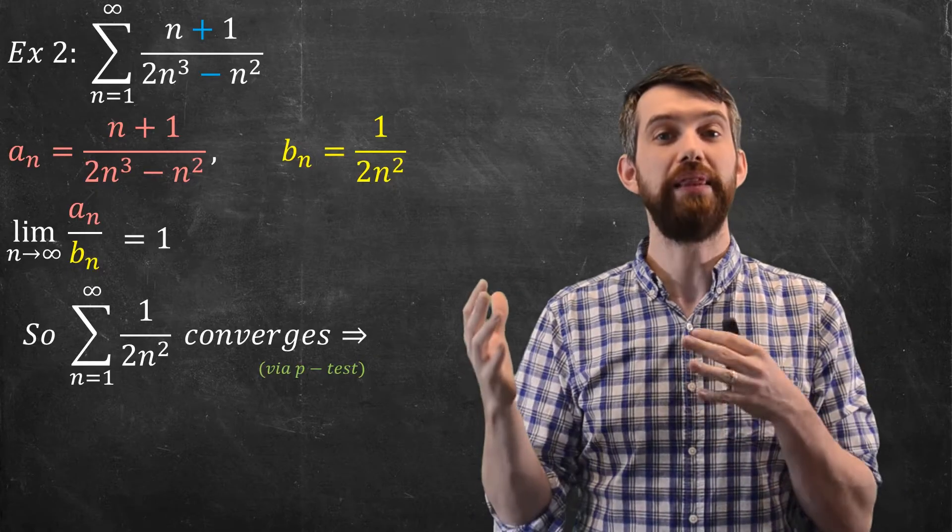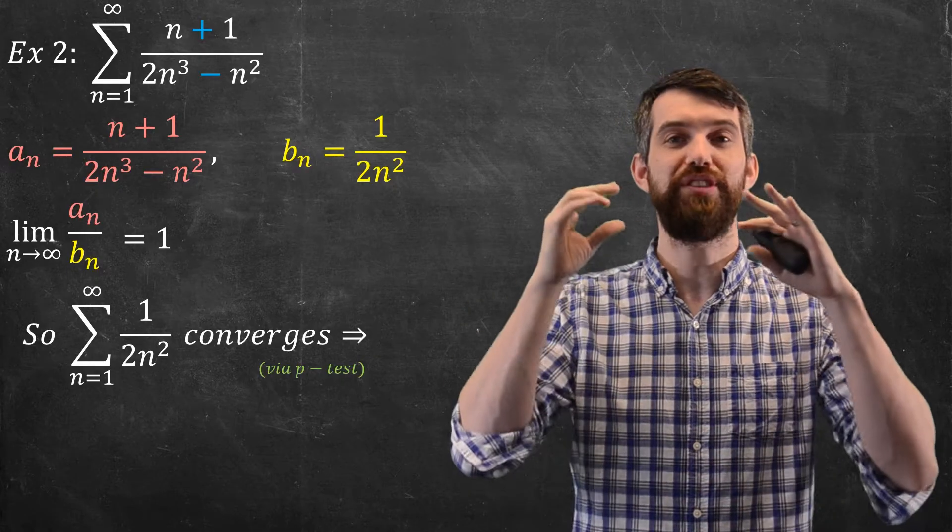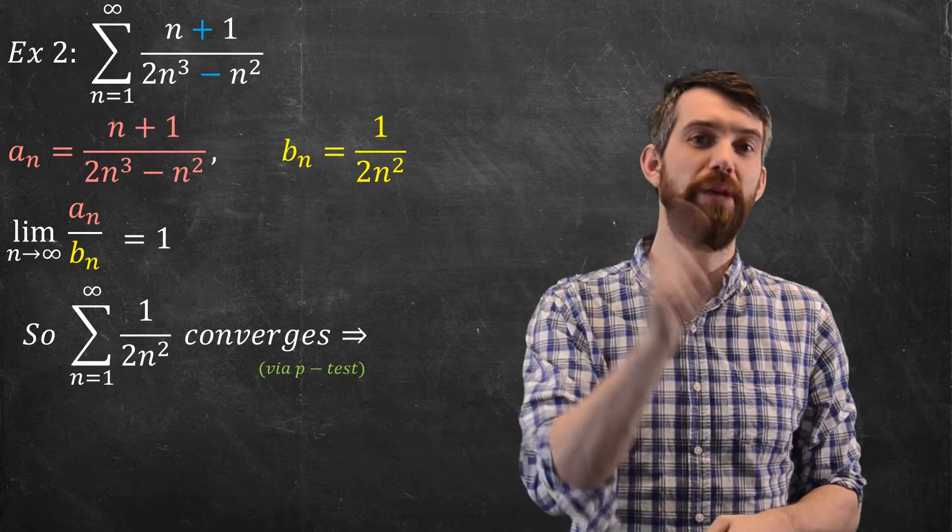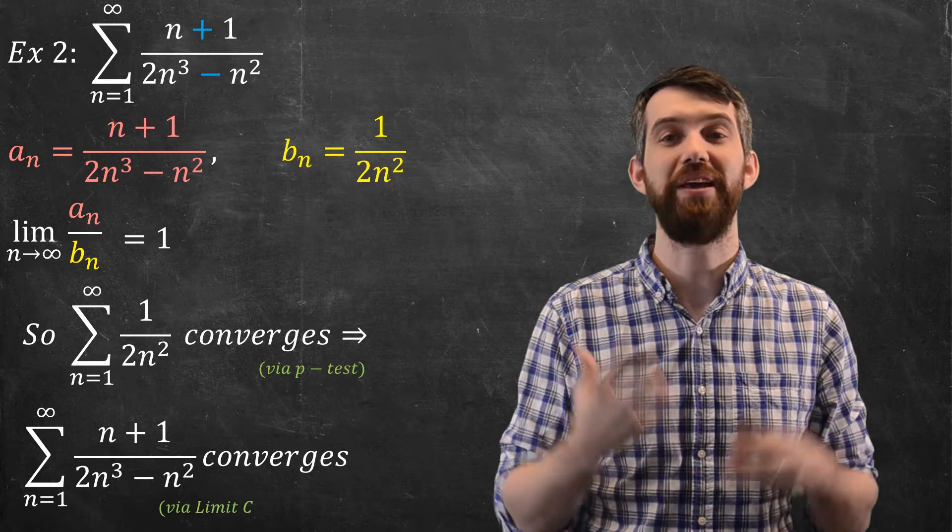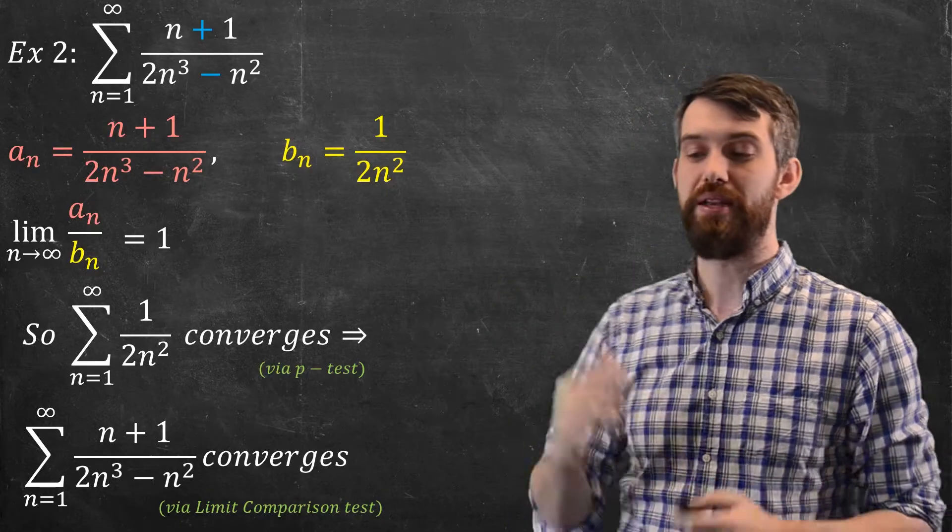then what the limit comparison test tells us is that since one of them converges and their limit of the quotient is 1, the other one is going to converge as well, and we get this result by the limit comparison test.